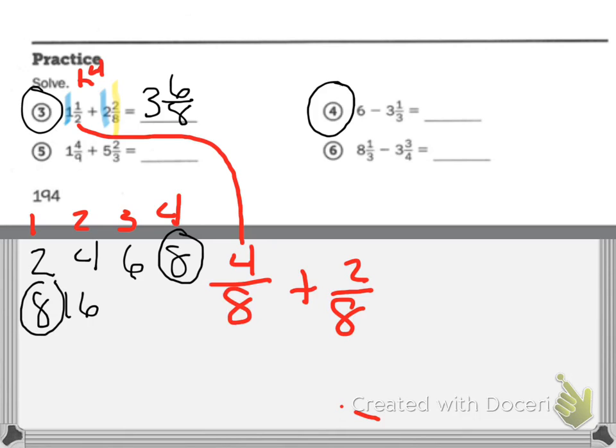Now, let's take a look at number four. This is another thing that we struggle with. Six minus three and one third. My first question is, for subtraction, you always start with the fractions. I don't have a fraction. What am I going to do?